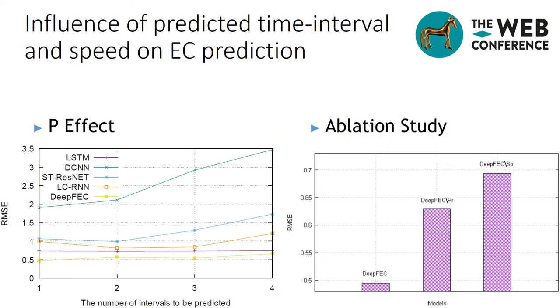We also observe the effect of the predicted time interval P where there is a slight decrease of our model error when varying P, which shows its capacity of dealing with long-term prediction. Especially, our model still has the best performance compared to other models.